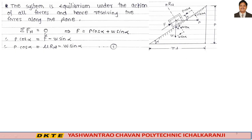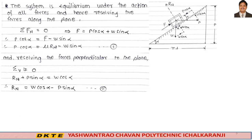Resolving the forces along the plane — summation of horizontal forces equals zero: F plus P·cos alpha (left to right) equals W·sin alpha, where F equals mu·Rn. This is equation number 1. Resolving forces perpendicular to the plane — vertical forces: Rn plus P·sin alpha equals W·cos alpha, so Rn equals W·cos alpha minus P·sin alpha. This is equation number 2.